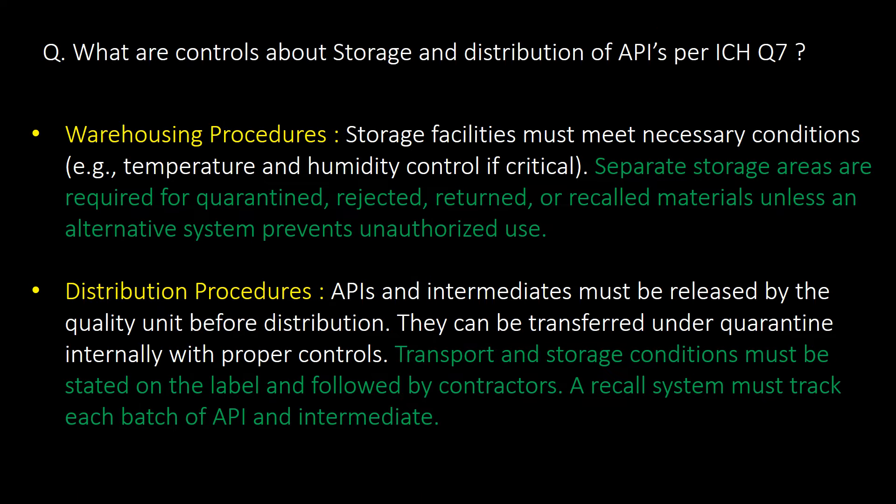What are the controls about storage and distribution of APIs as per ICH Q7? You can refer to the below controls about storage and distribution of APIs as per ICH Q7.